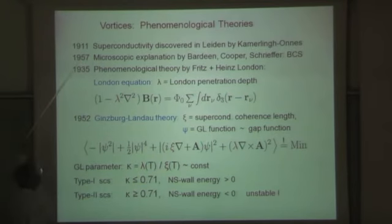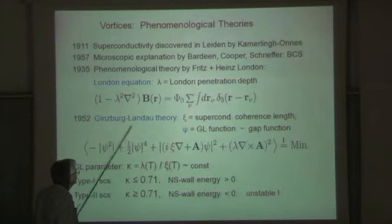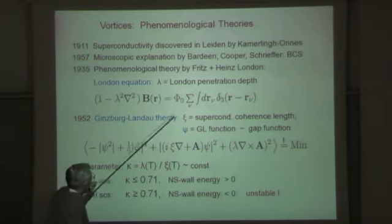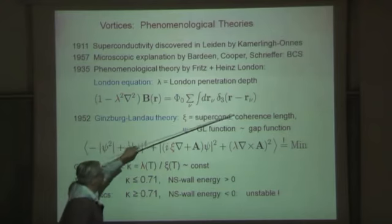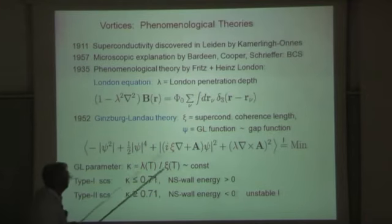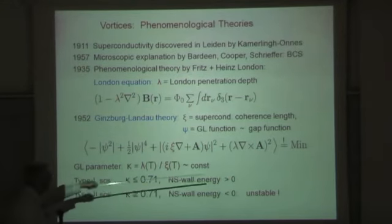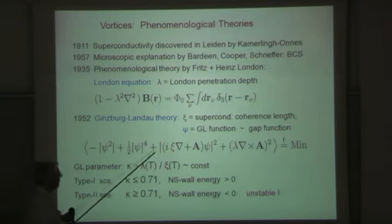Here in this transparency I just want to say it took 50 years from discovery to microscopic explanation—microscopic means in terms of electron theory. There were very useful phenomenological theories, for instance the London theory and the Ginzburg-Landau theory. Here the London theory is written already for the case where you have vortices at positions R_ν. Then the zero on this side is replaced by a sum of these delta functions which describes the cores of vortices.